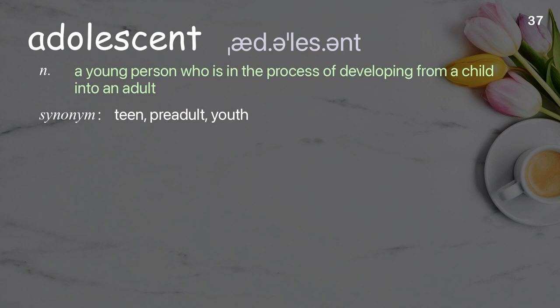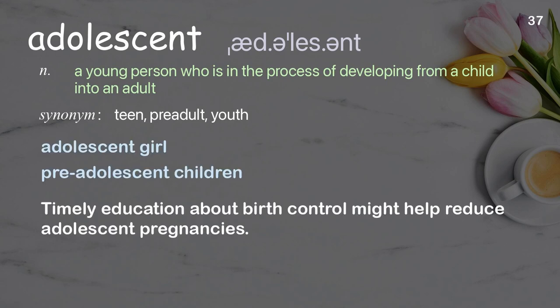Adolescent: A young person who is in the process of developing from a child into an adult. Examples: adolescent girl, pre-adolescent children. Timely education about birth control might help reduce adolescent pregnancies.